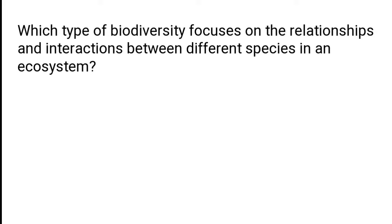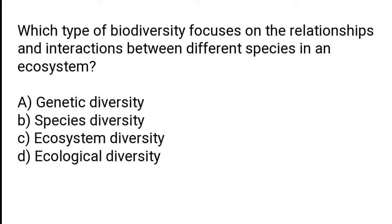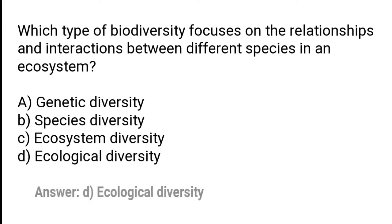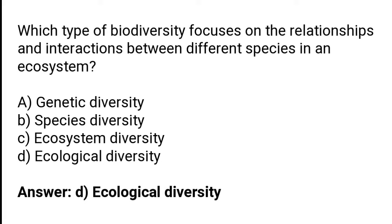Which type of biodiversity focuses on the relationships and interactions between different species in an ecosystem? A) Genetic diversity, B) Species diversity, C) Ecosystem diversity, D) Ecological diversity. The correct answer is option D — ecological diversity is the type of biodiversity which focuses on relationships and interactions between different species in an ecosystem.